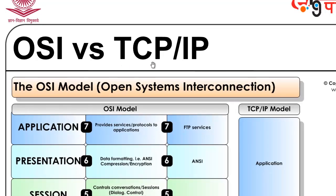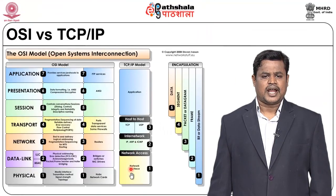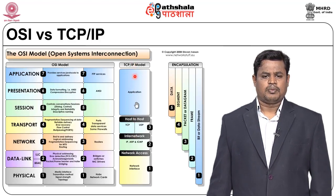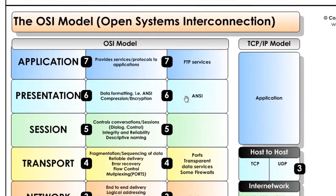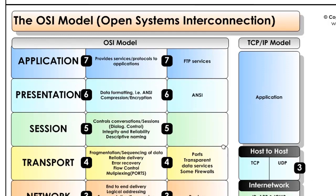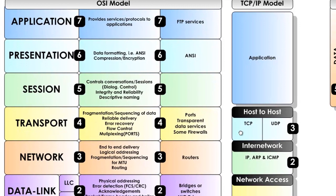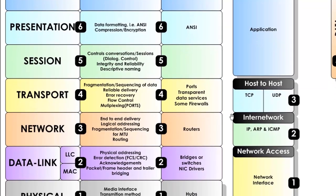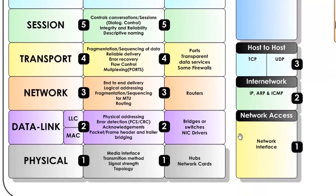Comparing OSI versus the TCP/IP model: TCP/IP has only 4 layers — network access layer, internet layer, transport layer, and application layer. The OSI model's application, session, and presentation layers map to TCP/IP's single application layer. The transport layer maps directly, and the network layer is renamed the internet layer, while data link and physical are combined into the network access layer.